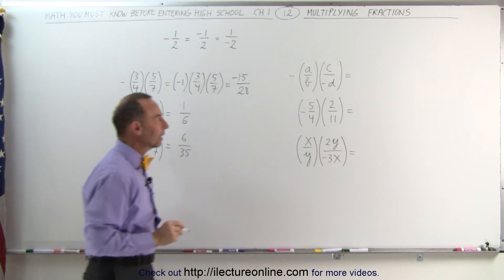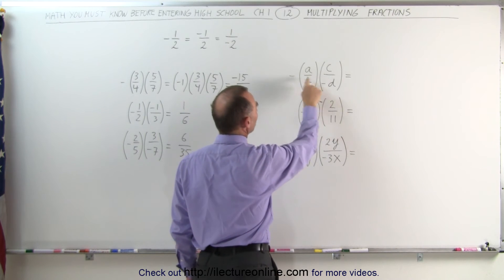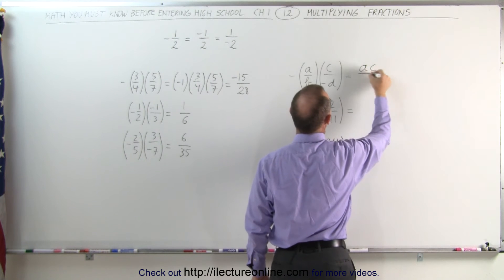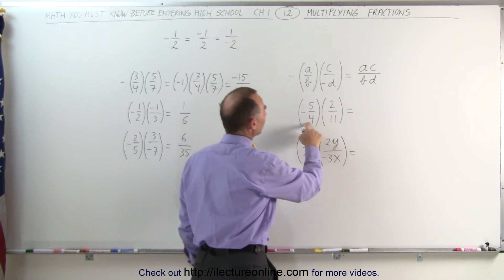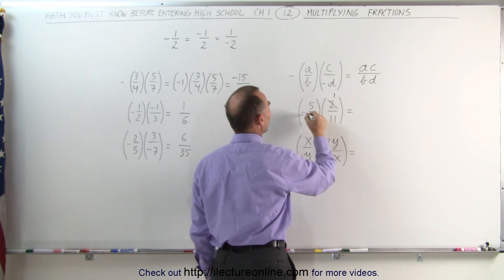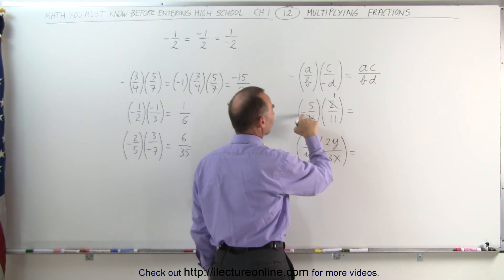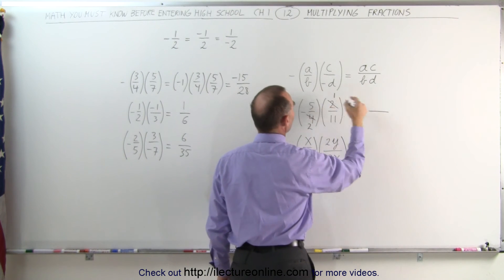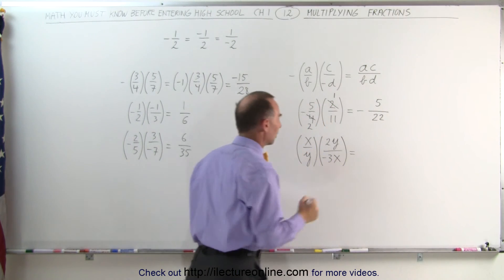Over here, this can be thought of as a negative 1 times a negative 1 — the two negatives cancel. This then becomes a times c in the numerator divided by b times d in the denominator. In the next example, we can simplify: divide the numerator by 2 and divide the denominator by 2, that becomes 2, and now we can go ahead and multiply. There is one negative sign, so we get a negative. 5 times 1 is 5, and 2 times 11 is 22, giving minus 5 over 22.